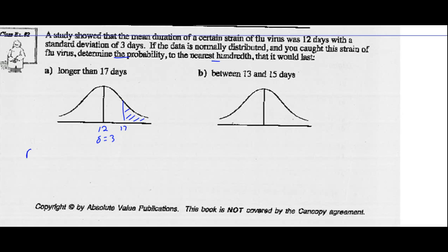Using our calculator, we're going to go normal CDF. We're looking for the area under the curve. Lower limit is 17, upper limit is 10 to the 99. This goes forever, it never ends. Mean is 12, standard deviation is 3. You type that into your calculator, we're going to get 0.05 to the nearest hundredth.